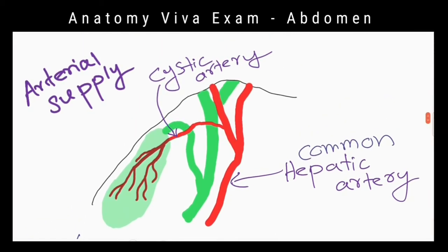What are the anatomical relations of the gallbladder? Anteriorly: anterior abdominal wall and inferior surface of the liver. Posteriorly: transverse colon, first and second parts of the duodenum. On the left side: caudate lobe of the liver, common hepatic artery, stomach, first and second parts of the duodenum. On the right side: right lobe of the liver.